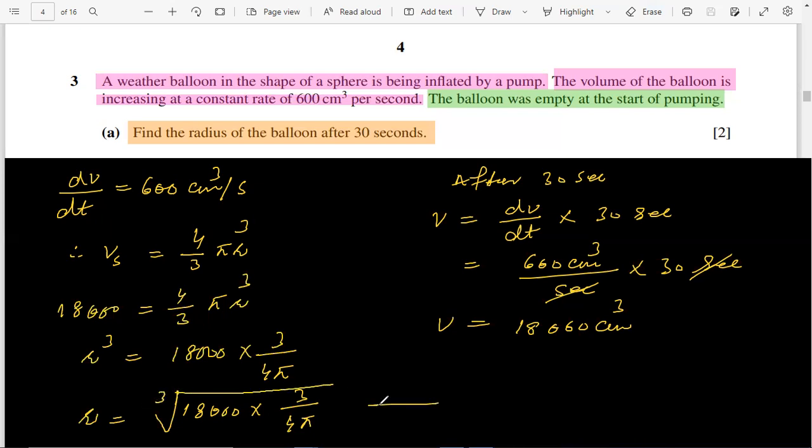So finally by calculating, radius is 16,297.18, but to 3 significant figures it will be 16.3 centimeter. In this way part A is completed for question 3.